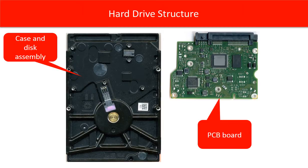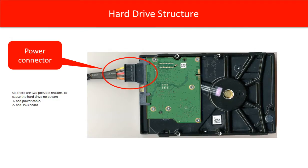Before answering the question, let us take a look at the hard drive basic structure. One hard drive includes two parts: the PCB board and the case. The PCB board controls the hard drive to work. The case houses the disk assembly. The power cable is connected to the PCB board directly.